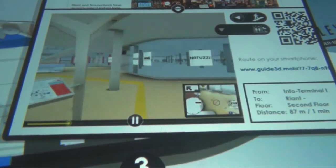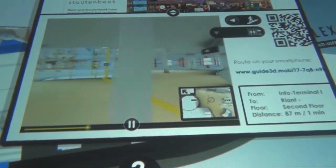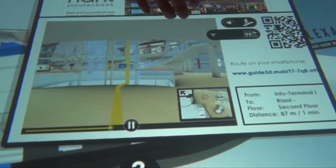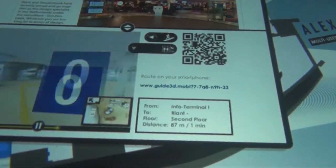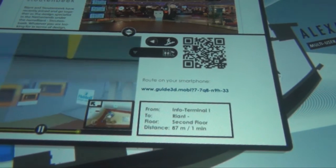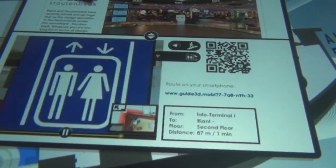Scanning the QR code with a smartphone will open a mobile phone optimized website. On this website the exact same 3D animation is displayed so that the user can double check the correct path while walking towards the desired destination.